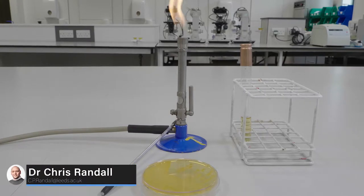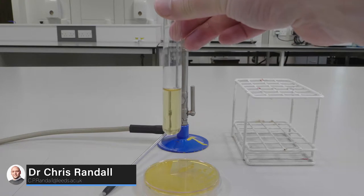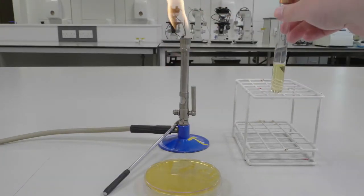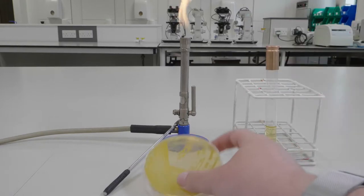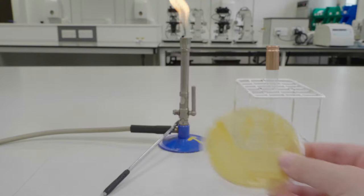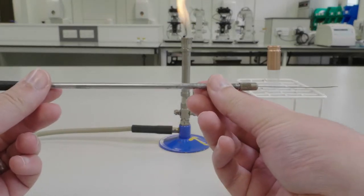In this video we are going to show you how to inoculate a sterile liquid culture medium with a bacterial colony. For this technique you are going to need a test tube containing sterile nutrient broth, your bacterial culture on a solid culture medium, and a culture loop also known as an inoculating loop.